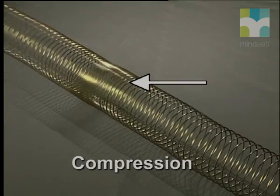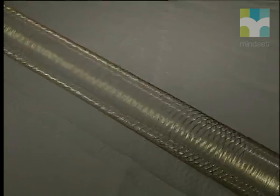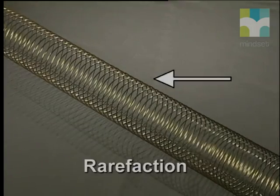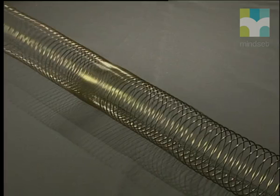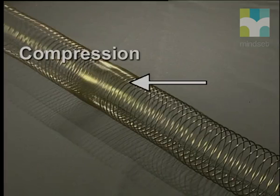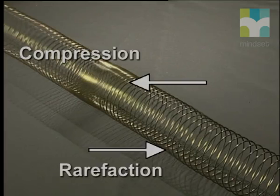This wave consists of a series of compressions, where the coils of the spring are squashed closely together, and rarefactions, where the coils of the spring are stretched further apart. As you can see, the coils of the spring are compressed when the spring is pushed in, and they are stretched apart when the spring is extended again. The compressions and rarefactions alternate along the length of the spring.